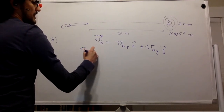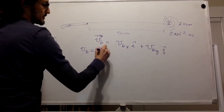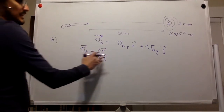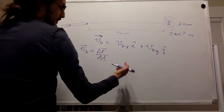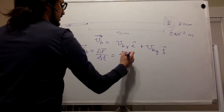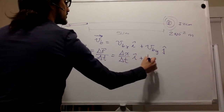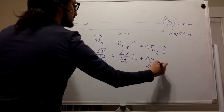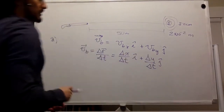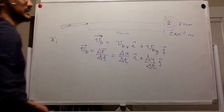Velocity is displacement divided by time, and since displacement is a vector it has x and y components. This equals the change in x divided by time in the i-direction, plus the change in y divided by time in the j-direction. Either component gives you the answer because the physics apply independently in x and y.